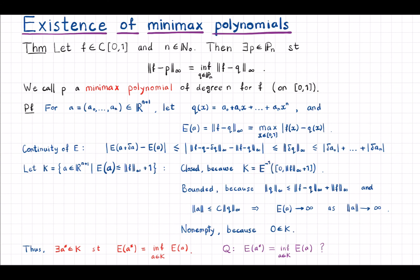Now K is bounded because the infinity norm of an arbitrary polynomial q is bounded by the infinity norm of f minus q plus f by the triangle inequality. And the coefficient's one norm of a point in R^(n+1) as coefficients of q, that norm is bounded by some constant times the norm of q, the infinity norm of that polynomial q.